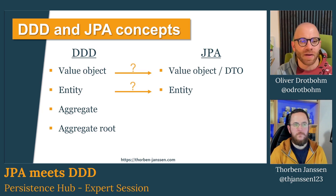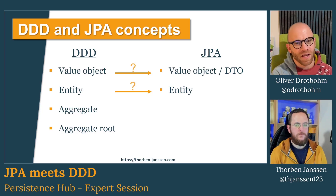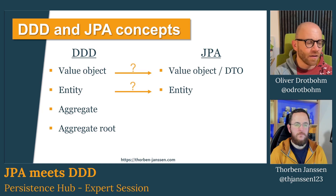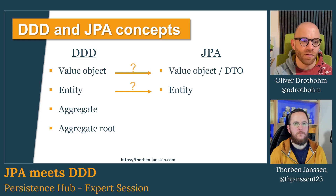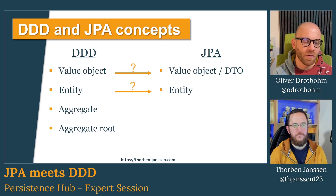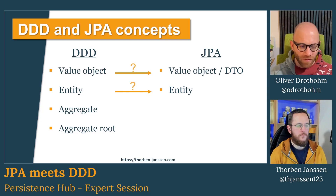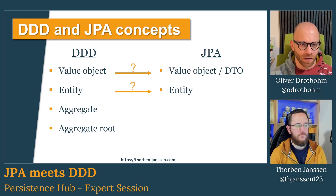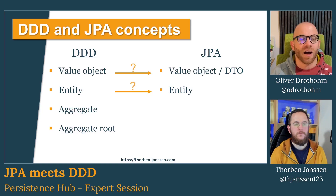It starts with value objects, which is basically an expression of a simple value that doesn't have any kind of identity. Things like an email address, a color, an address — stuff that is more domain specific. That's where the domain driven part comes from, but it's usually implemented in applications as primitives — an email address as a string or something like that. DDD basically says you rather want to have dedicated concepts for those in your applications — classes and types for that.